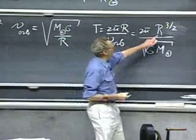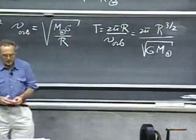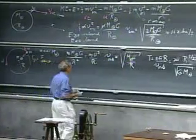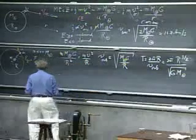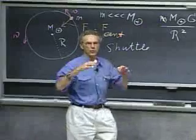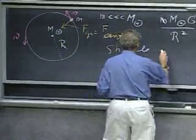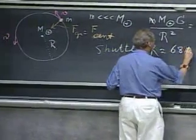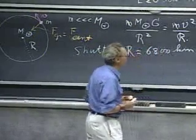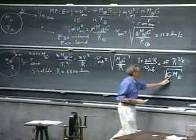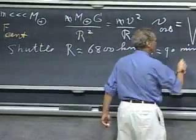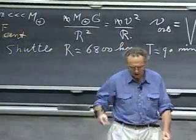So again, if you know the radius, if you know how far you are away from the Earth, the period follows uniquely. If you know the period, then the distance to the satellite follows uniquely. If we take the shuttle as an example of a near-Earth orbit, the shuttle may be 400 kilometers above the Earth's surface, so we have to add to the radius of the Earth 400 kilometers. So you end up with about 6,800 kilometers for the radius of the orbit of the shuttle. You substitute that in here, the mass of the Earth and the gravitational constant, you'll find that T is about 90 minutes.